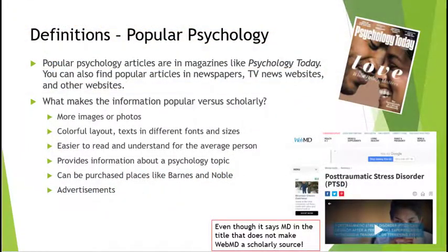For this assignment, it is really important to understand the definition of popular psychology. Popular psychology articles are in magazines like Psychology Today. You can also find them in newspapers, TV news websites, and other websites. What makes that information popular versus scholarly? Usually there are more images and photos, colorful layouts, and text in different fonts and sizes. The information is written for the average person to understand. Even though it provides valuable information, it is done in a more popular way. Usually there are advertisements, and remember — even though it says MD in the title, WebMD is not a scholarly source.